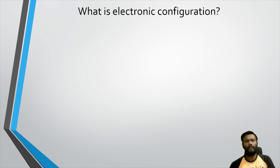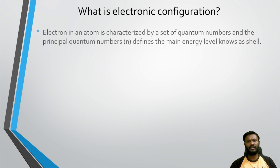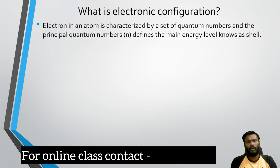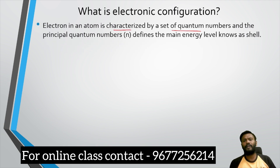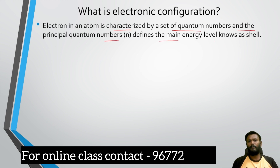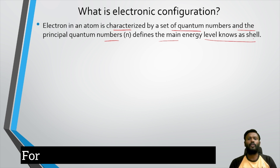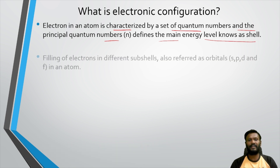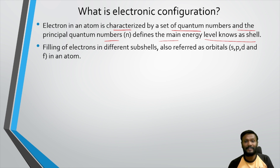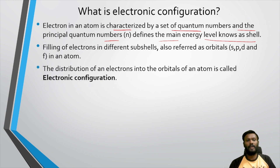First of all, what is electronic configuration? An electron in an atom is characterized by a set of quantum numbers, and the principal quantum number defines the main energy level known as the shell. The filling of electrons into different shells, also referred to as orbitals in an atom — the distribution of electrons into the orbitals of an atom is called electronic configuration.